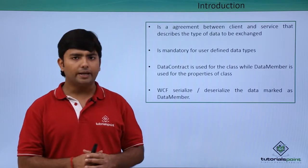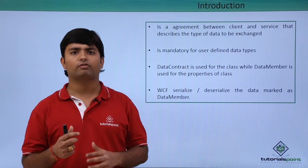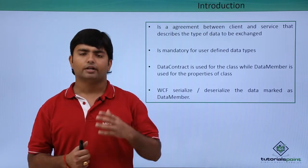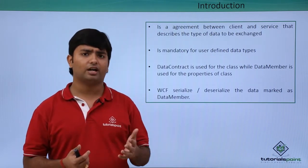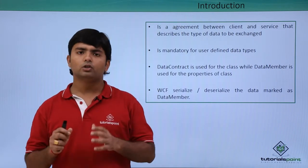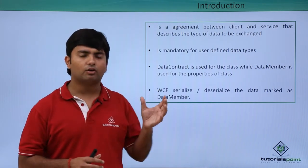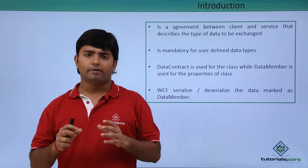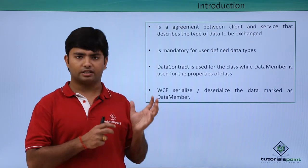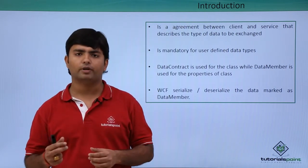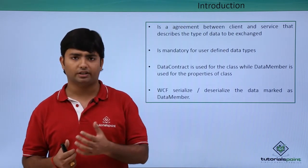All predefined data types such as integers and strings are automatically handled by the data contract. But if you are using any user-defined data type such as a class, interface, or enum, you have to decorate them with the data contract attribute. The purpose is to serialize those data types into an XML document which is passed during communication.